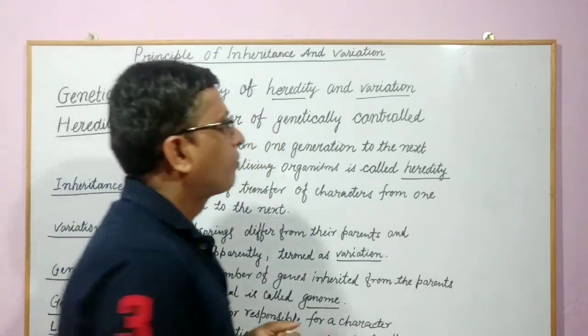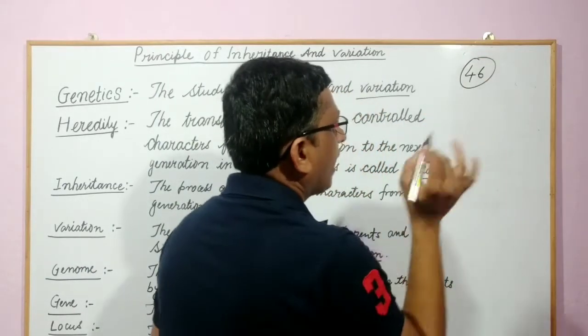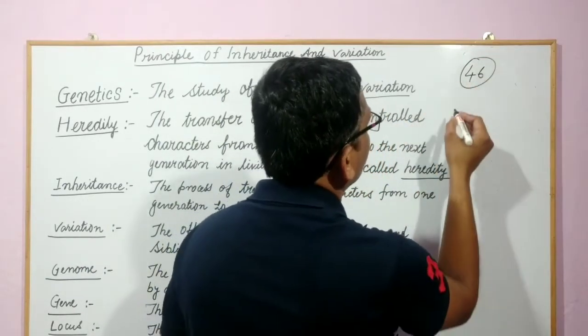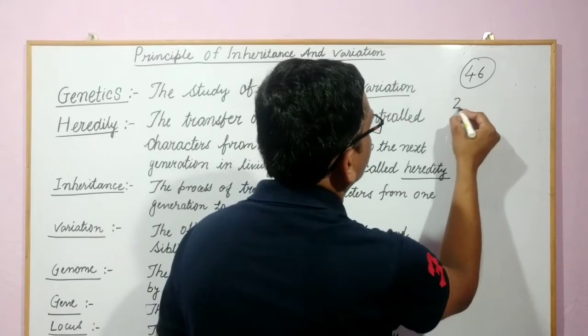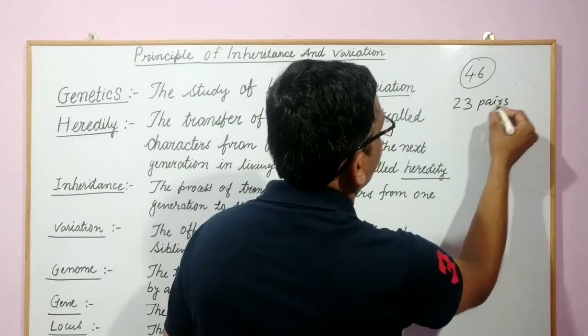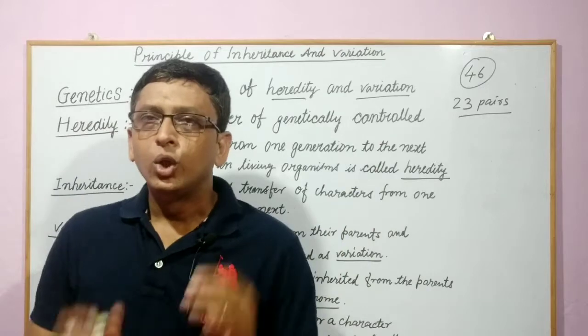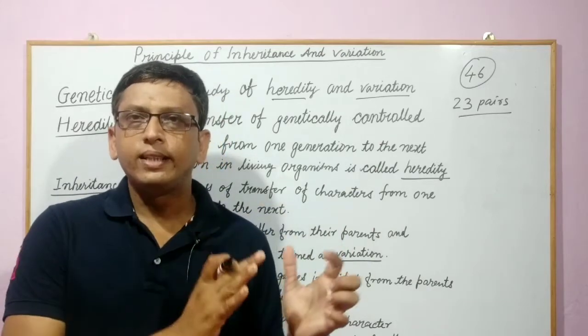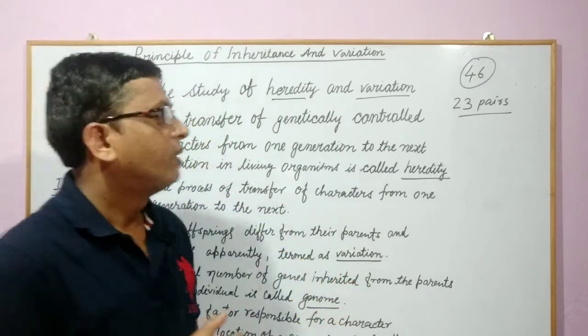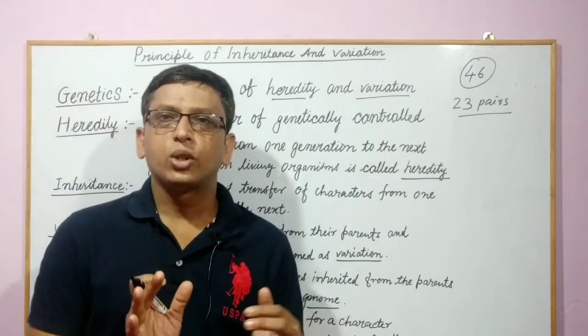So let us take an example of human beings. Human beings have 46 chromosomes in a cell and you know these 46 chromosomes are present in pairs. So how many pairs are there of chromosomes? 23 pairs. So you have two sets of chromosomes, 23 and 23. 23 pairs means 46.